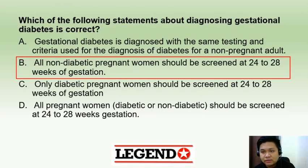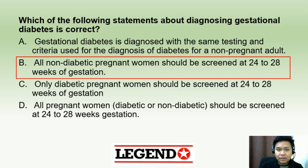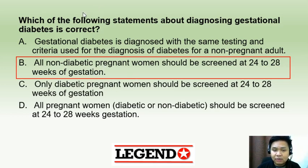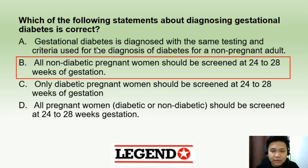Which of the following statements about diagnosing GDM is correct? There are four categories of diabetes mellitus: type 1, type 2, GDM, and other specific types. Gestational diabetes mellitus is diabetes first diagnosed during pregnancy. If a mother is already diabetic, she cannot be diagnosed with GDM, since by definition GDM requires first onset or first detection during pregnancy. The correct answer is letter B: all non-diabetic pregnant women should be screened for GDM at 24 to 28 weeks of gestation. Letters C and D are incorrect as they include already-diabetic women.